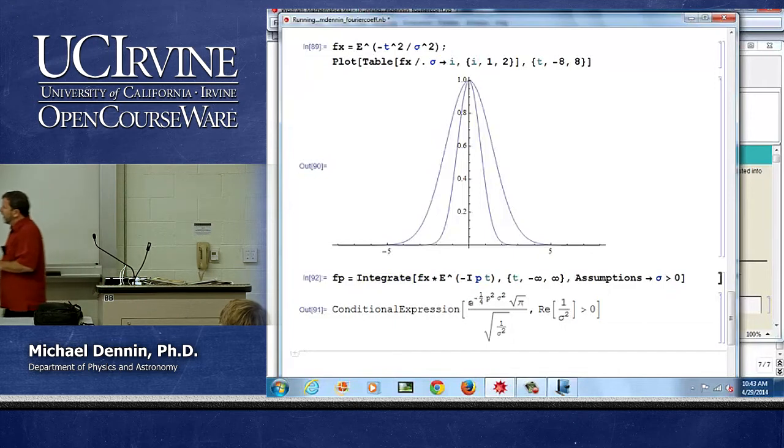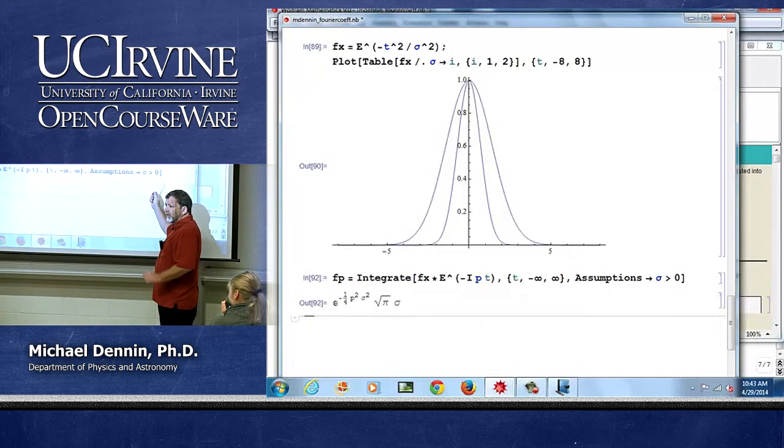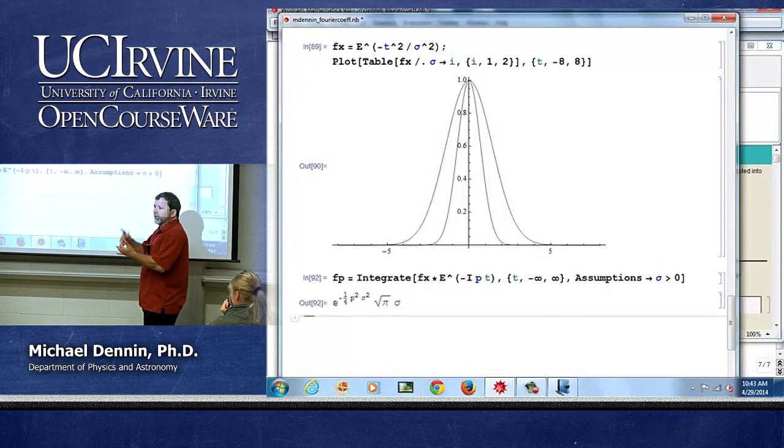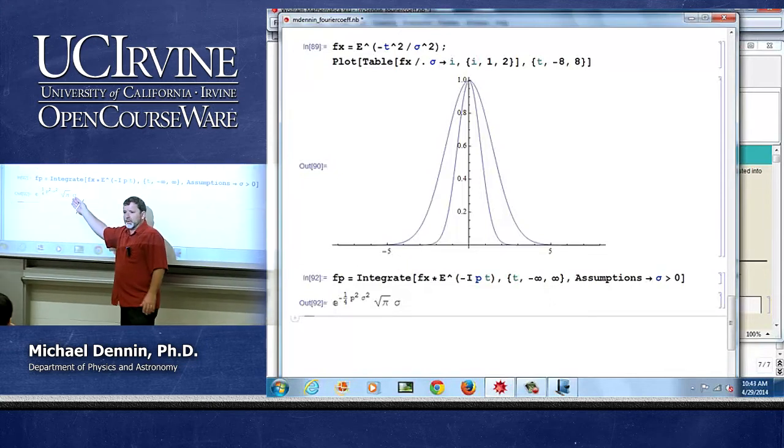And in most cases, this is sufficient. I don't have to tell it that it's real and greater than zero. Sometimes Mathematica gets really picky, and it wants to know a list of assumptions. But this is enough in this case to get the answer you expect.